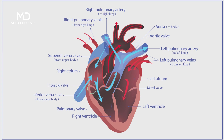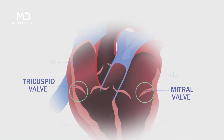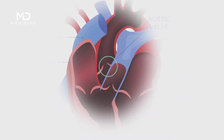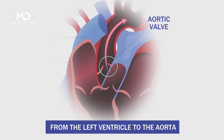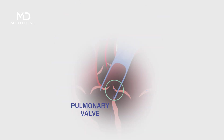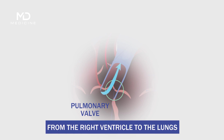The heart is also equipped with four valves that open and close to control blood flow in and out of the four chambers. These valves are the tricuspid, mitral, aortic, and pulmonary valves. The tricuspid and mitral valves regulate blood flow from the atria to the ventricles. The aortic valve is responsible for blood flow from the left ventricle to the aorta. Finally, the pulmonary valve regulates blood flow from the right ventricle to the lungs.